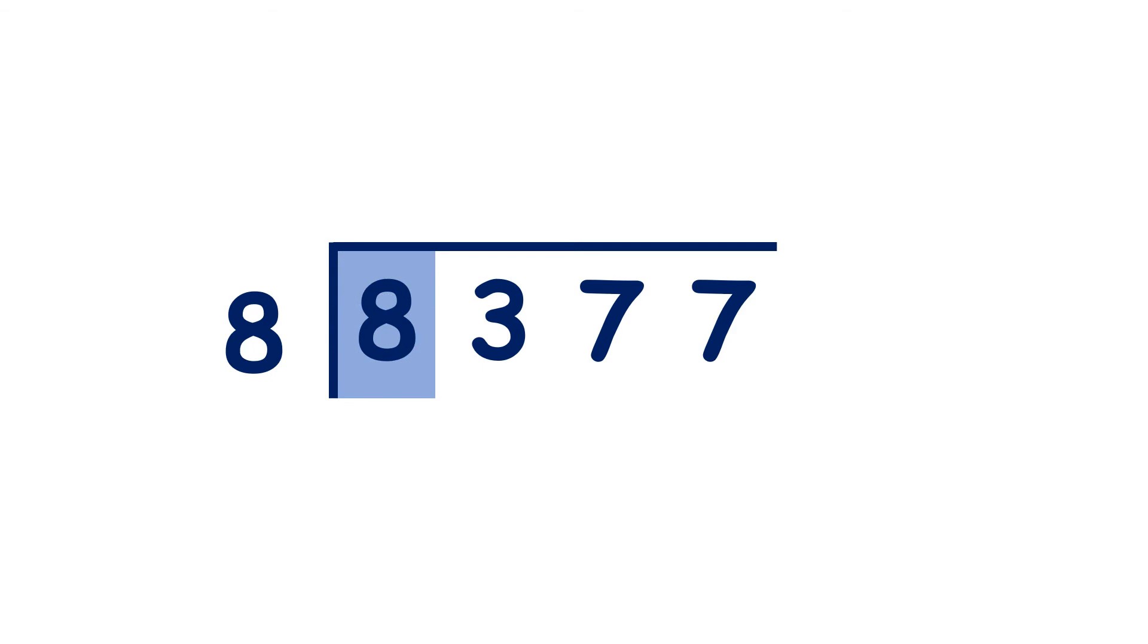8 divided by 8 is 1. 3 divided by 8 is 0, remainder 3. 37 divided by 8 is 4, remainder 5, and 57 divided by 8 is 7, remainder 1.